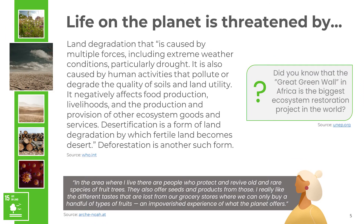Life on the planet is threatened by land degradation, which is caused by multiple forces, including extreme weather conditions, particularly drought. It is also caused by human activities that pollute or degrade the quality of soils and land utility. It negatively affects food production, livelihoods and the production and provision of other ecosystem goods and services.